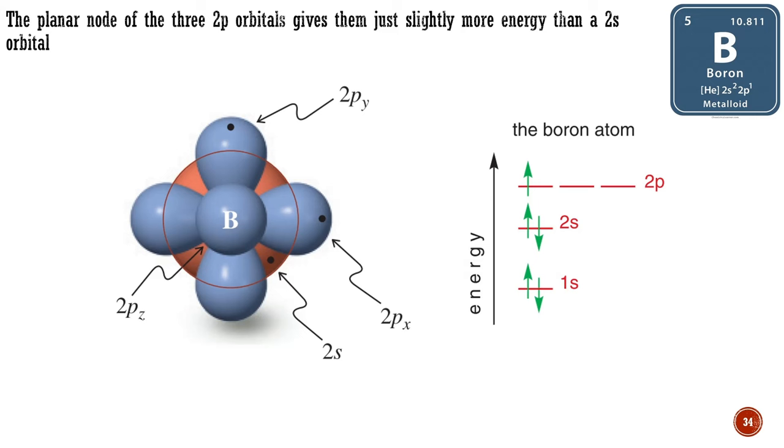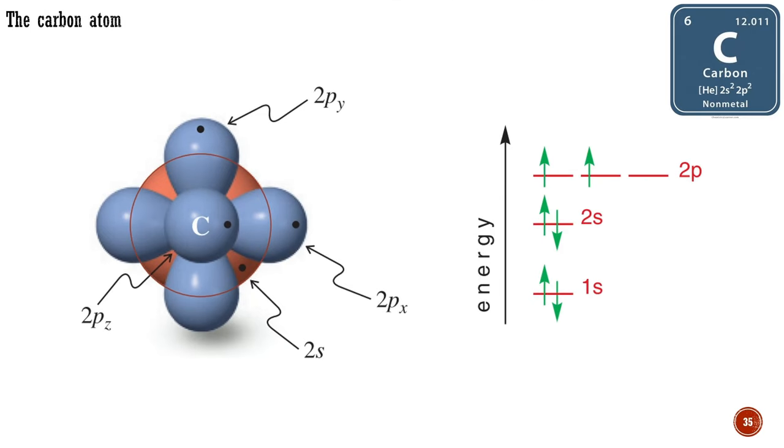On the left, there is a picture of them all superimposed. The next element, carbon, with one more electron, seems to have a choice. It can either put its sixth electron paired with the fifth one in the same 2p orbital, or it can put it into a new 2p orbital, leaving both electrons unpaired. In fact, it chooses the latter option.